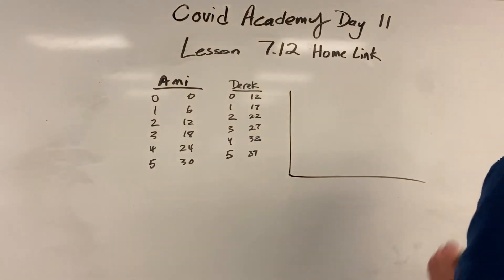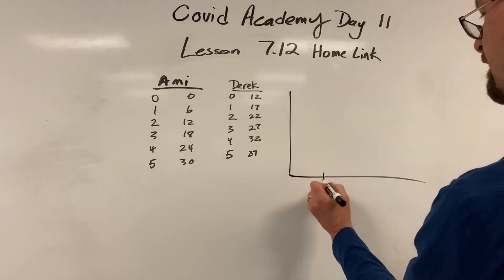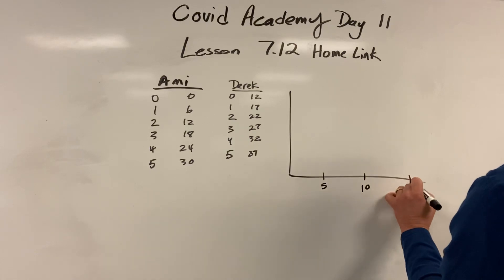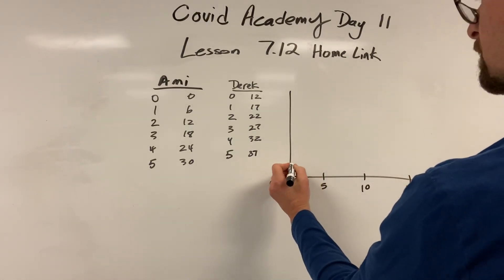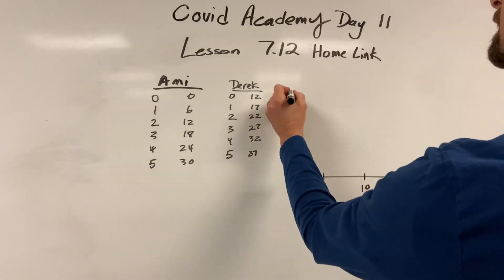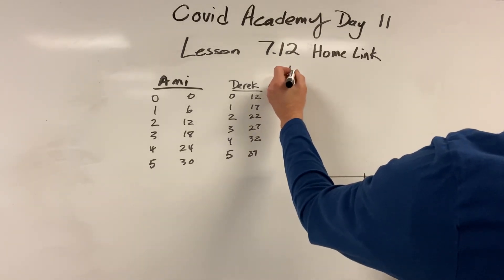So anyway, your graph should look something like this. Let's go 5, 10, 15, and let's go 10, 20, 30, 40, 50, 60, 70, 80.